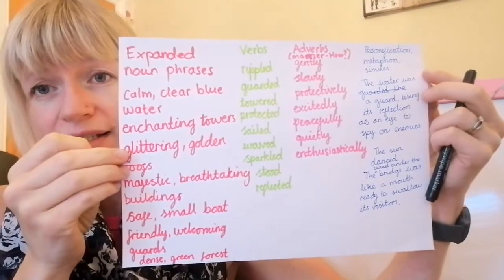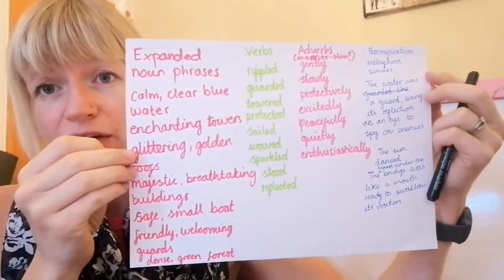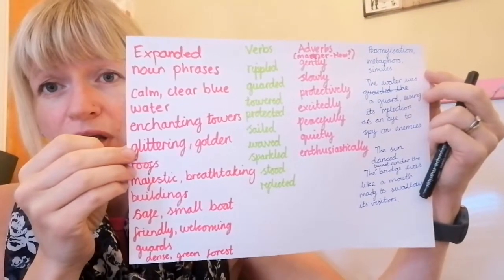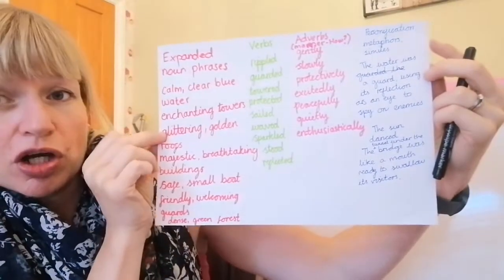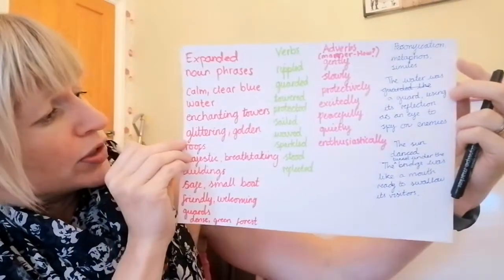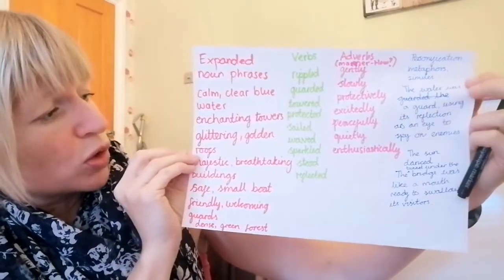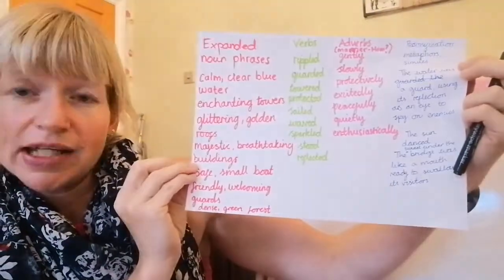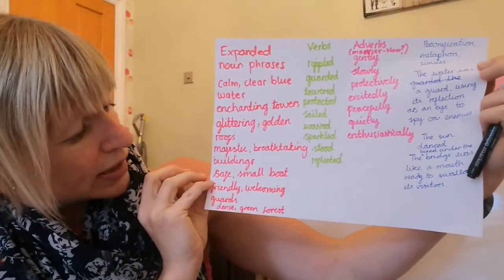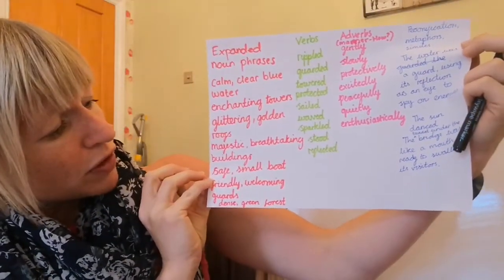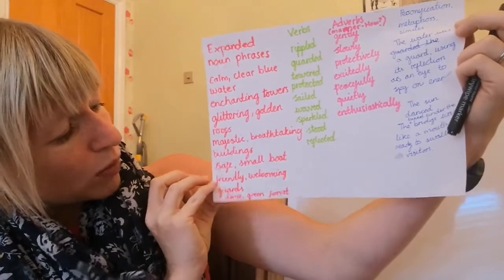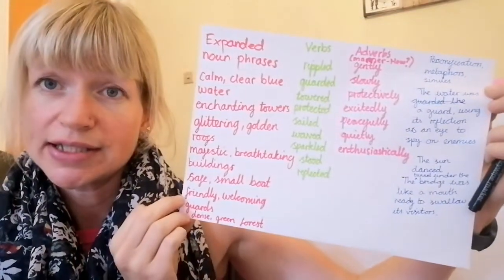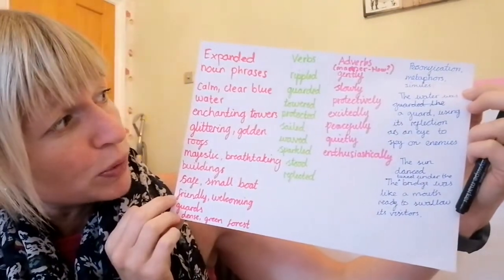So my extended noun phrases are there: the calm clear blue water, enchanting towers, glittering golden roofs, majestic breathtaking buildings, safe small boat, friendly welcoming guards, and dense green forest.